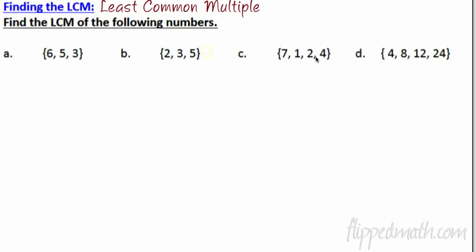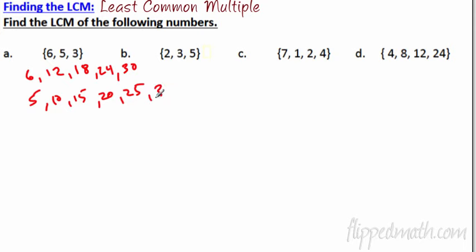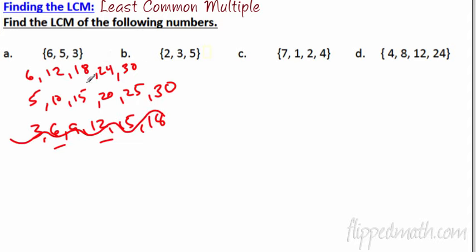Let's talk about least common multiple — LCM. This takes you back to sixth or seventh grade. What you do is list the multiples of each number: 6, 12, 18... and look for the smallest multiple all numbers have in common. Notice that 3 is a factor of 6, so all multiples of 6 are also multiples of 3 — you don't even need to worry about 3. Just look for 6 and 5. The first number in common between them is 30.